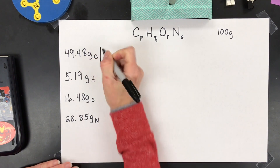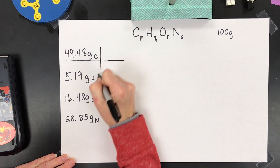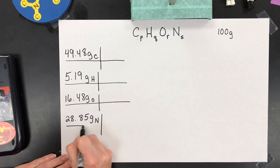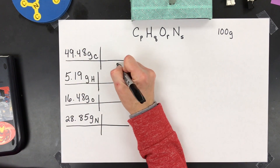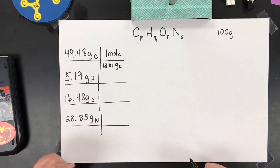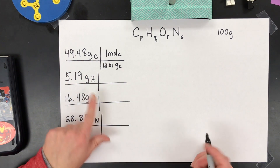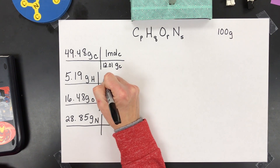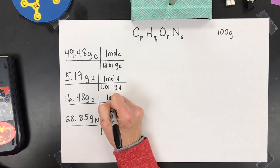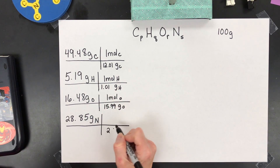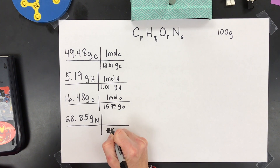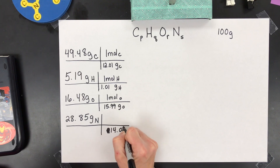Step two: after you get the masses of each element, find the mole amount of those. We're going to convert grams of each element into moles. Carbon has a molar mass of 12.01, hydrogen has a molar mass of 1.01 grams per one mole of hydrogen, oxygen is 15.99 grams per one mole, and nitrogen is 14.01 grams per one mole. Teachers make mistakes — I wrote 28 for nitrogen before, but it is 14.01.